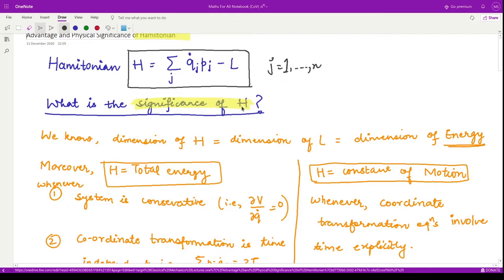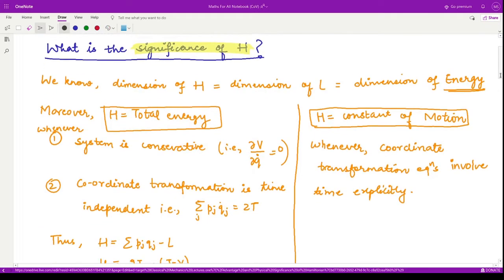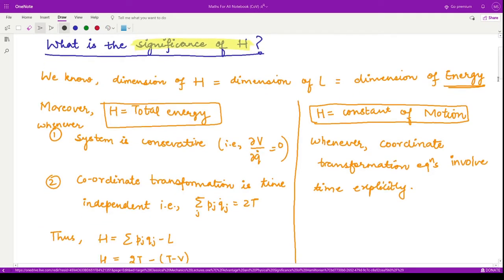So as we have discussed this in the previous video, in some cases this H denotes the total energy of the system. Basically the dimension of this Hamiltonian H and the dimensions of Lagrangian operator L are same as that of dimensions of energy.